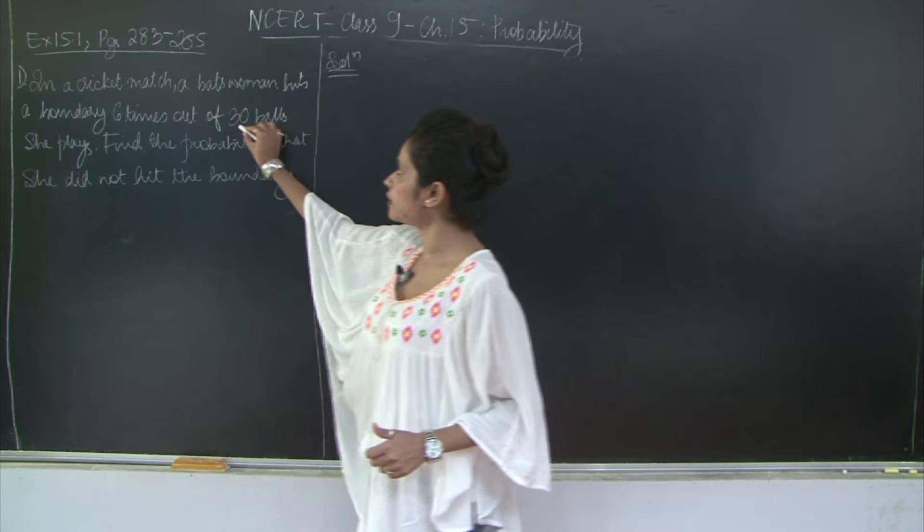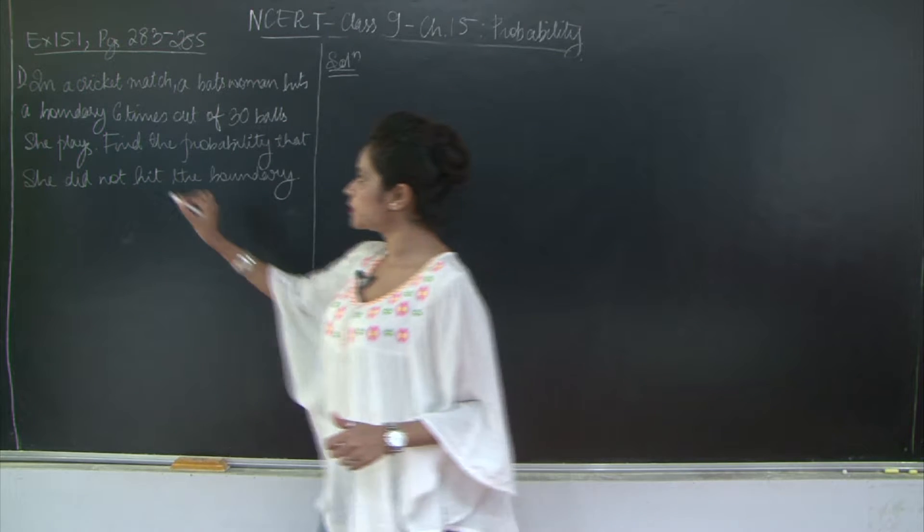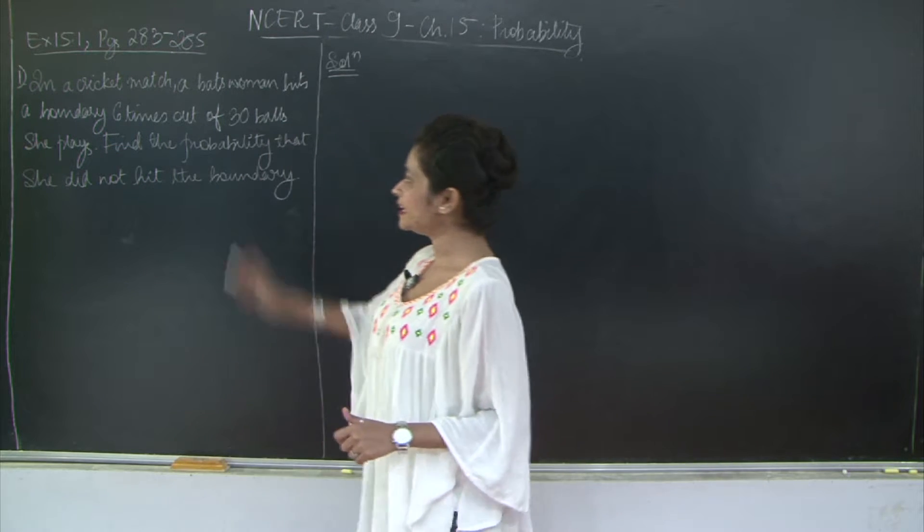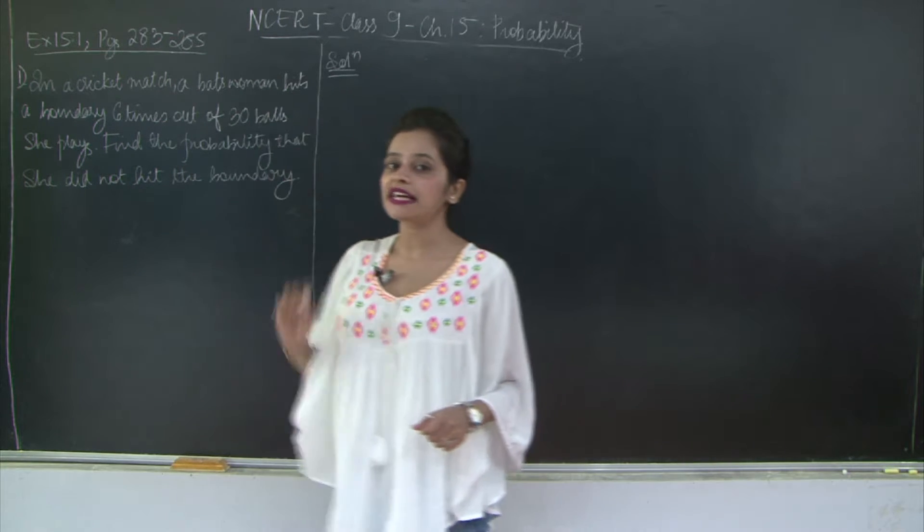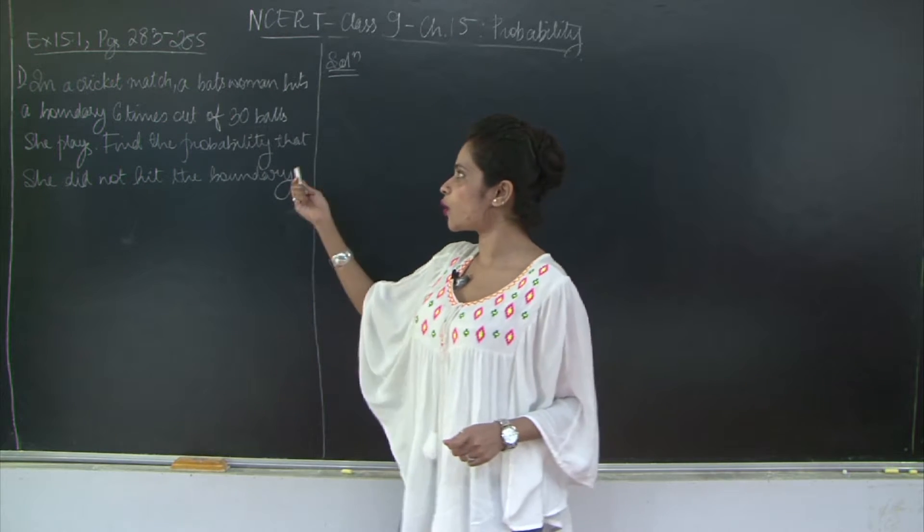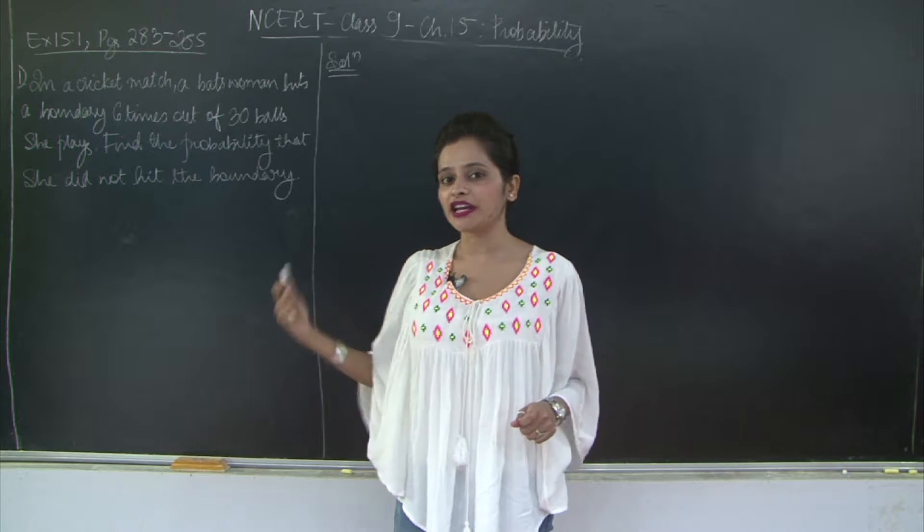So what is the total number of balls that she played? It was 30. And how many times did she hit the boundary? It was 6. So how many times did she not hit the boundary? It is obviously going to be 30 minus 6, which is 24.